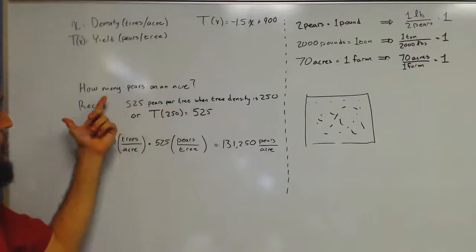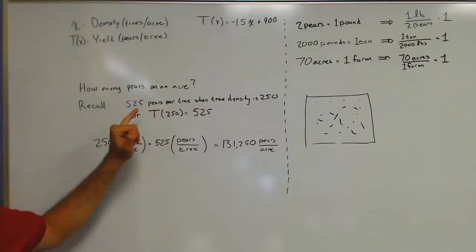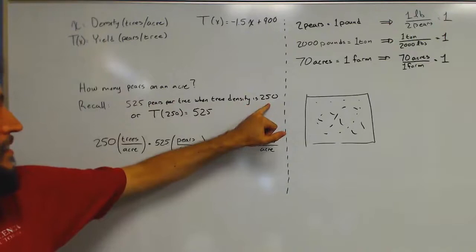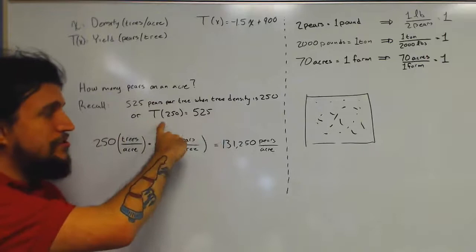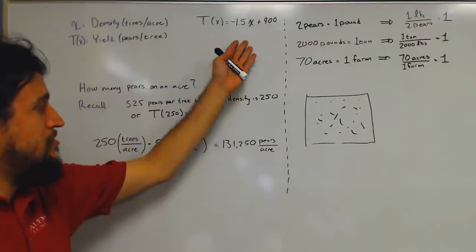So basically the question, how many pairs on an acre? We'll recall that given one of our ordered pairs, if there were 250 trees on a single acre, we had 525 pairs on each tree. Or the way we would write this in function notation is T of 250 equals 525. So if we're going to plug 250 in for x into this equation, we get 525 out, that's consistent with the data we used to come up with this equation.